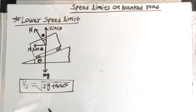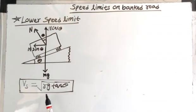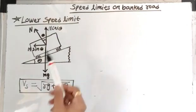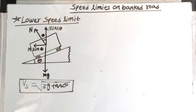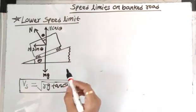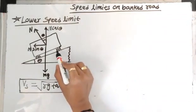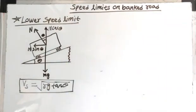But in actual practice, the vehicle never travels exactly at this safe speed. Therefore, the force of static friction needs to be considered, which exists between the road surface and the tire.